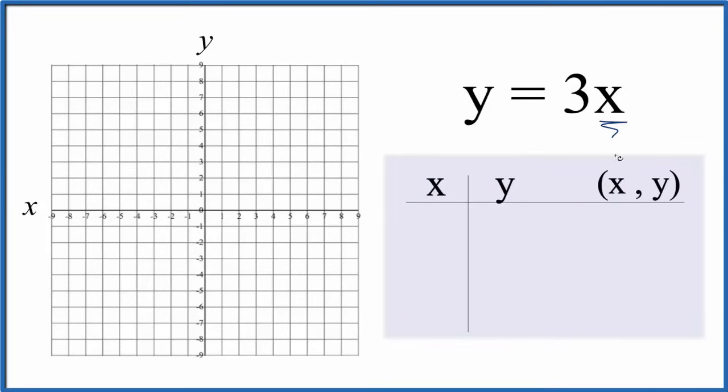Let's start with x equals 0. If x is 0, 3 times 0 is 0, so y is 0. If x is 1, 3 times 1 is 3. If x is -1, 3 times -1 is -3.